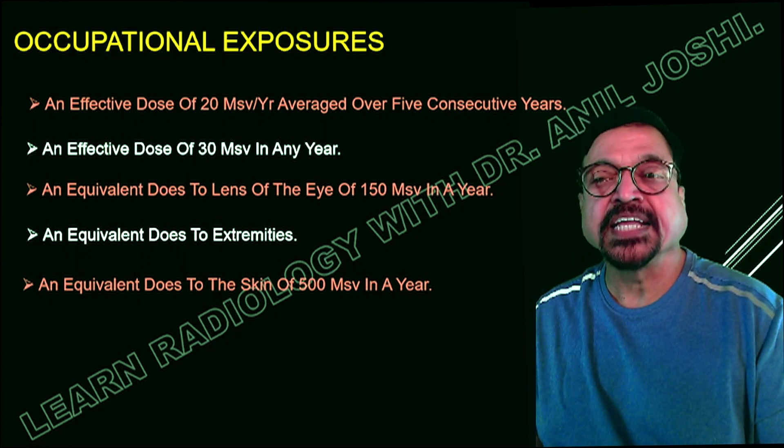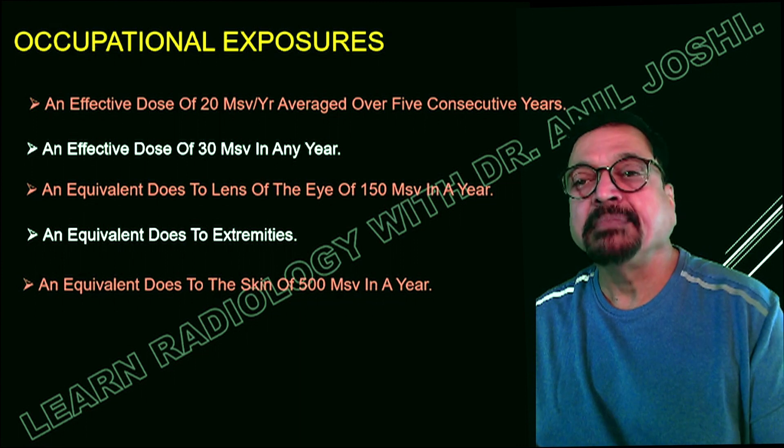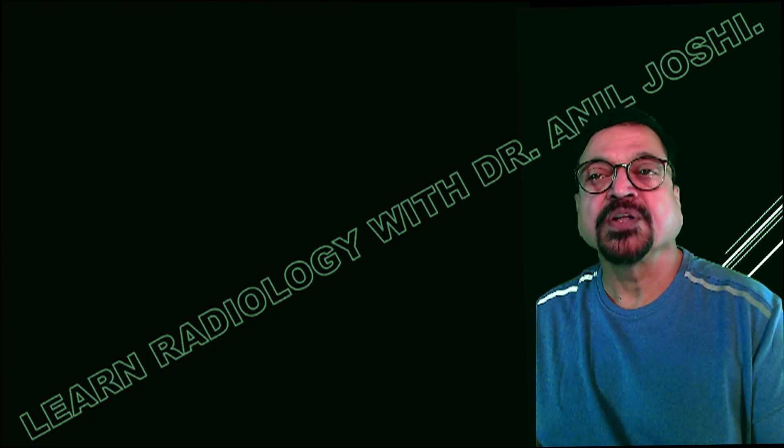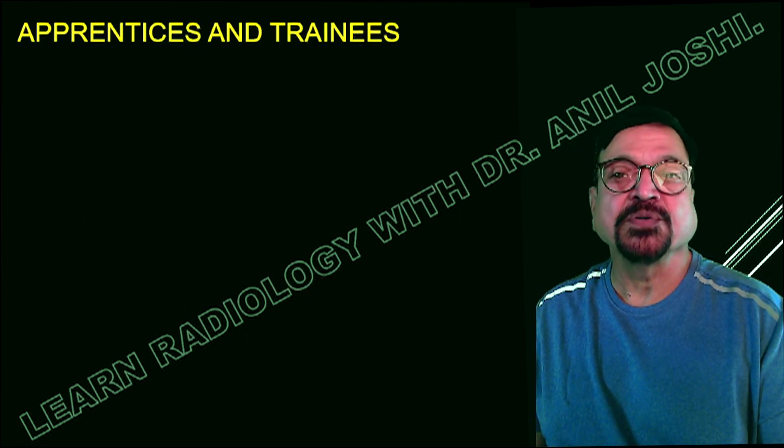Regarding AERB dose limits: the limits of effective dose apply to exposures from both external and internal sources, and include national background radiation. For occupational workers, an effective dose of 20 mSv averaged over five consecutive years is the guideline. An effective dose exceeding 30 mSv in a single calendar year is a warning that you are exceeding the permitted radiation dose.